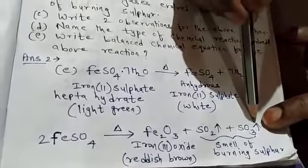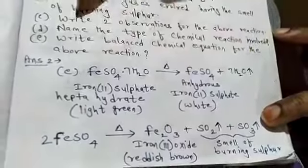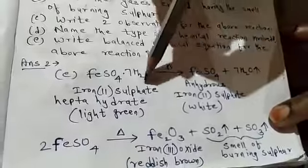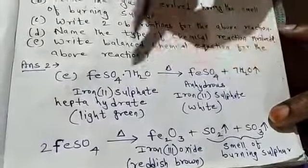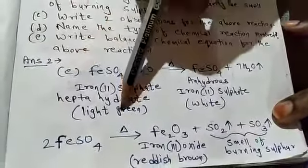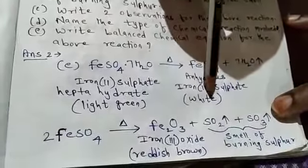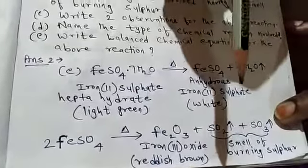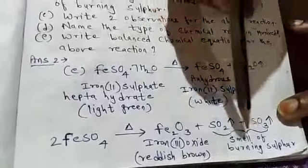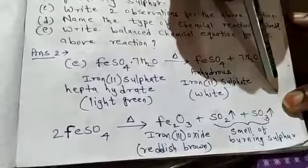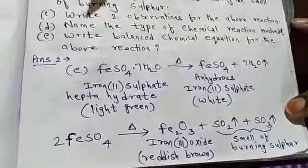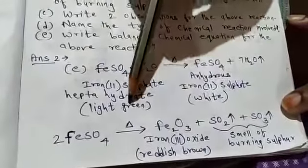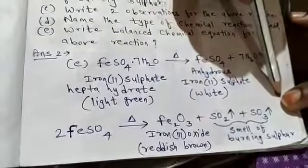Your third question: write two observations for the above reaction. The two observations are: first, change in color — the light green color changes to white and then finally to reddish brown. Second, evolution of gas — some gases are evolved.